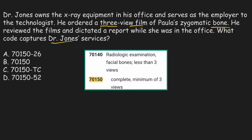70150 is the right code. Now we have to decide whether to append modifier 26, no modifier, modifier TC, or modifier 52. The right answer is option B — 70150 with no modifier — because the physician provided both the professional and technical components of the service. When a physician provides both components, we should use the complete code without any modifier. Therefore the right answer is option B.